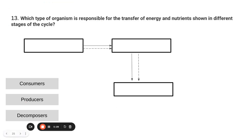Number 13. Which type of organism is responsible for the transfer of energy and nutrients shown in different stages of the cycle? So the energy is through that measurement of heat, that solid line, and the nutrients, carbon, nitrogen, phosphorus, that's through the dash line. So we know what begins all of these processes. It all begins with plants. So our first box there is the producer.